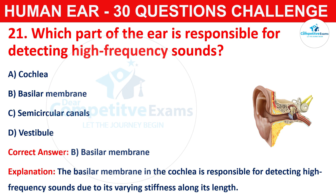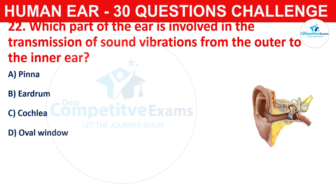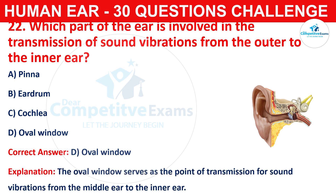Question number twenty-two: which part of the ear is involved in the transmission of sound vibrations from the outer to the inner ear? The options are pinna, eardrum, cochlea, or oval window. The correct answer is D, that is oval window. The oval window serves as the point of transmission for sound vibrations from the middle ear to the inner ear.